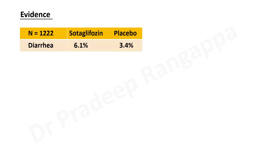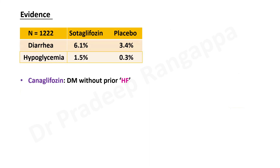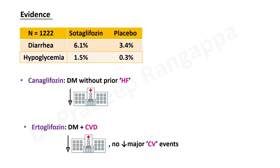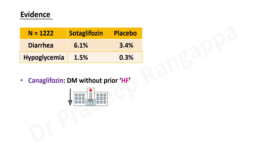Looking at side effects of Sotagliflozin versus placebo: diarrhea was slightly more common with Sotagliflozin, and hypoglycemia tended to be slightly higher at 1.5%. Studies with Canagliflozin were done only in diabetics without prior heart failure and found significant reduction in hospitalization. A study with Ertugliflozin in patients with diabetes and cardiovascular disease also found reduced hospitalization with no major cardiovascular events. The major evidence base, however, comes from the DAPA-HF trial and EMPEROR-Reduced trial, which were done in both diabetics and non-diabetics, followed by the SOLOIST-WHF trial.